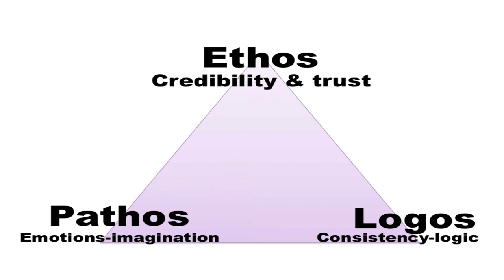There are three major components - make sure you have these in your notes: ethos, pathos, and logos. You're going to hear that a lot, especially in the upper grades. Next time you watch TV, like tonight when you watch commercials, try to pay attention to what are they using - ethos, pathos, or logos. They usually use all three of them.